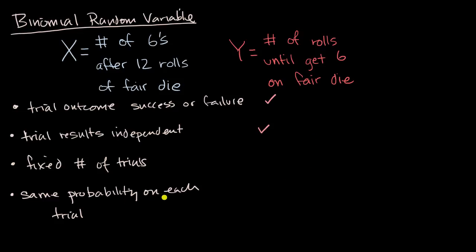And we also have the same probability of success on each trial. In every case, it's a one-sixth probability that I get a six, so this stays constant. And I skipped this third condition for a reason, because we clearly don't have a fixed number of trials.